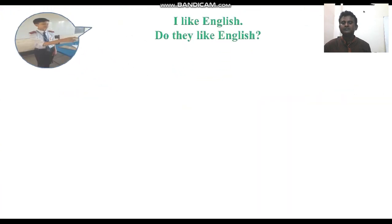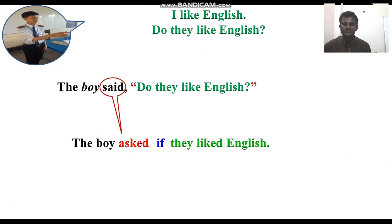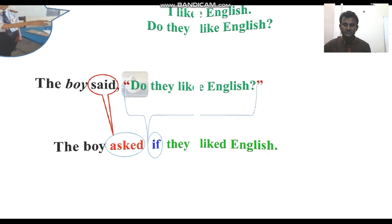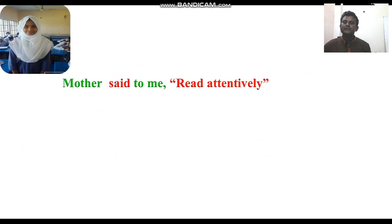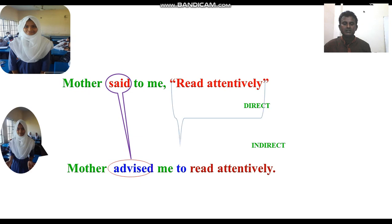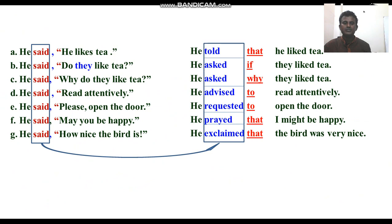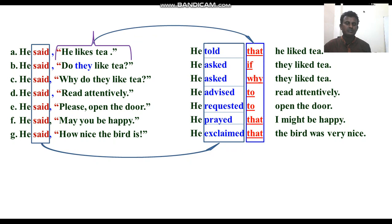For example: 'The boy said to them, I like English' becomes 'The boy asked if they liked English.' 'Mother said to me, read attentively' becomes 'Mother advised me to read attentively.' Here, the reporting verb has changed and the inverted comma is replaced with that, if, or to.